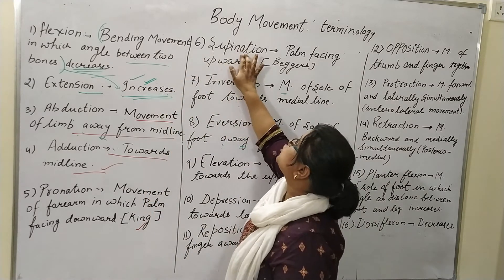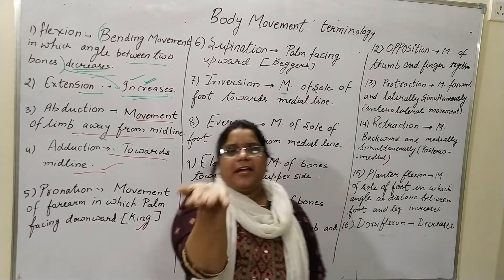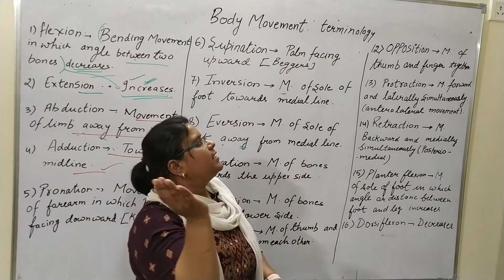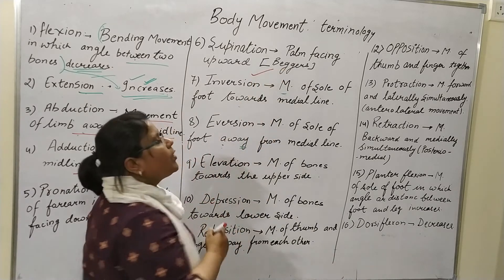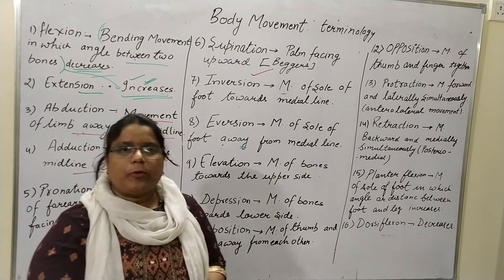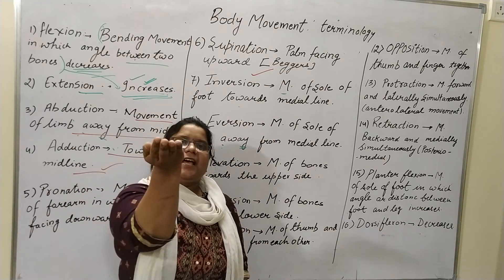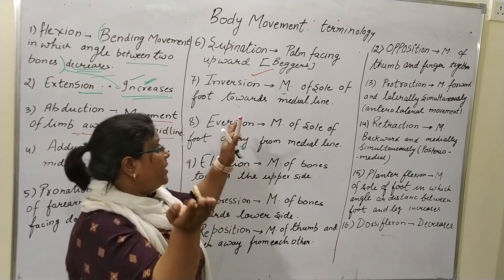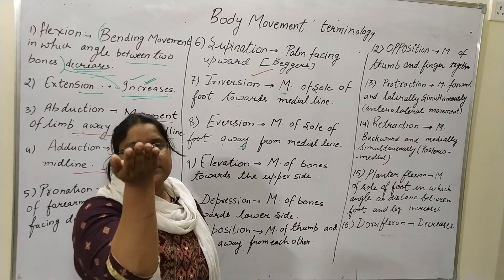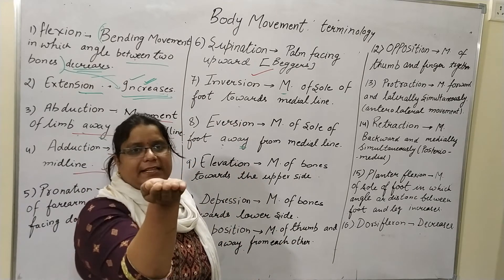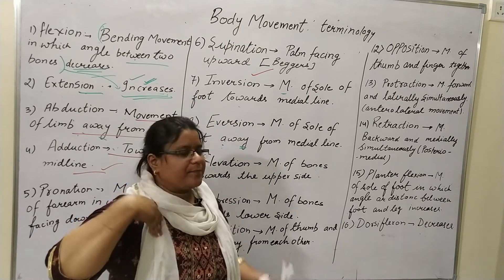Now, supination — the palm facing upward. The palm is facing upward and this is the beggar-like position. So in pronation the position is palm facing down, and in supination the palm position is facing upward — this is the beggar position and that is the king position.